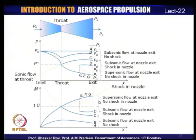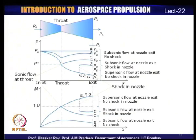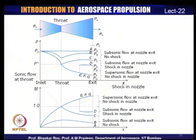If back pressure is lower than at state D, the shock continuously moves toward the exit. For states E, F, and G, we continuously have supersonic flow all the way to the nozzle exit — achieved because the back pressure was adjusted to values lower than P_D. For pressures lower than that, we get supersonic flow all the way to the nozzle exit.